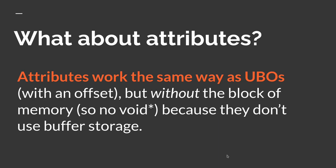What about attributes? They work exactly the same way as UBOs with an offset, but without the block of memory — no void pointer — because attributes don't use buffer storage. The way attributes are loaded is as one blob; attributes simply tell the shader what is where. We only have to do that setup once and don't have to manage it. The same principle applies: we have an offset that increases along with the size as you add attributes.